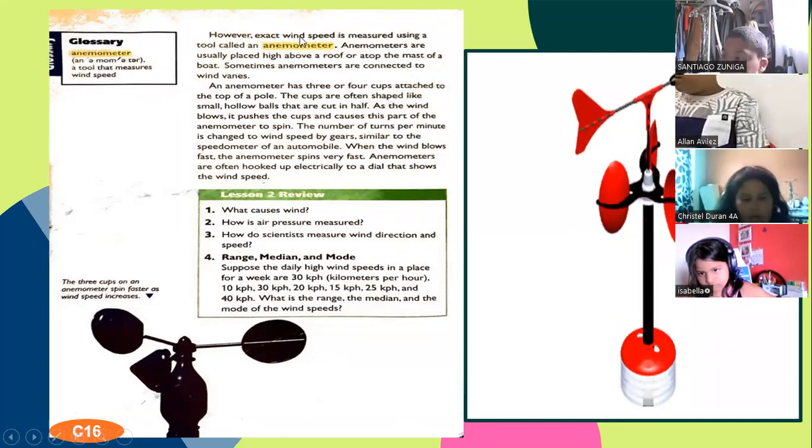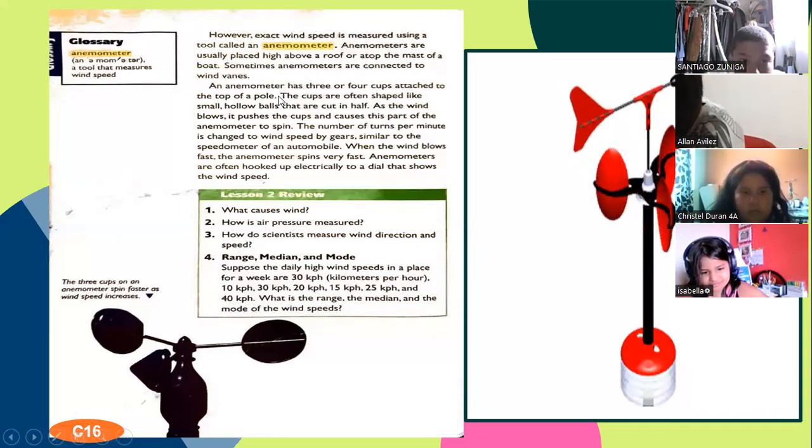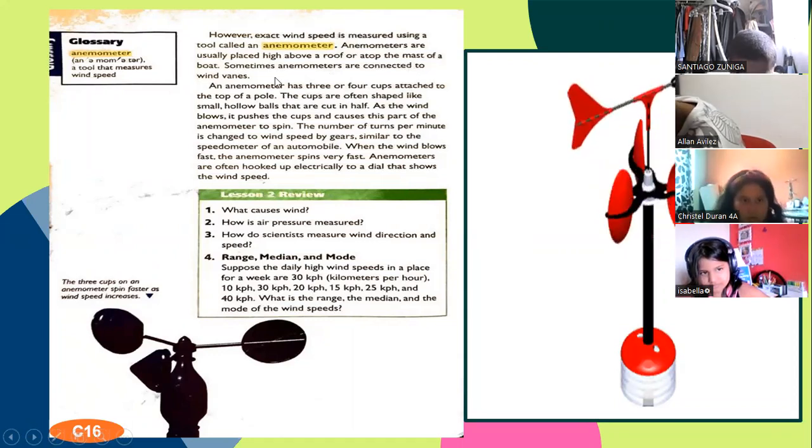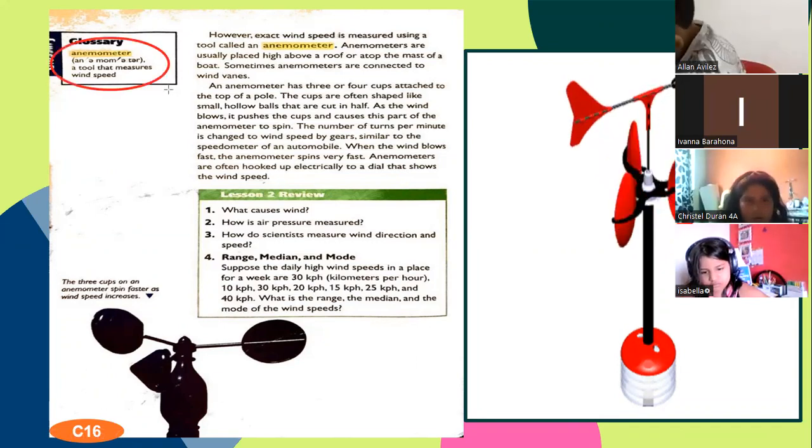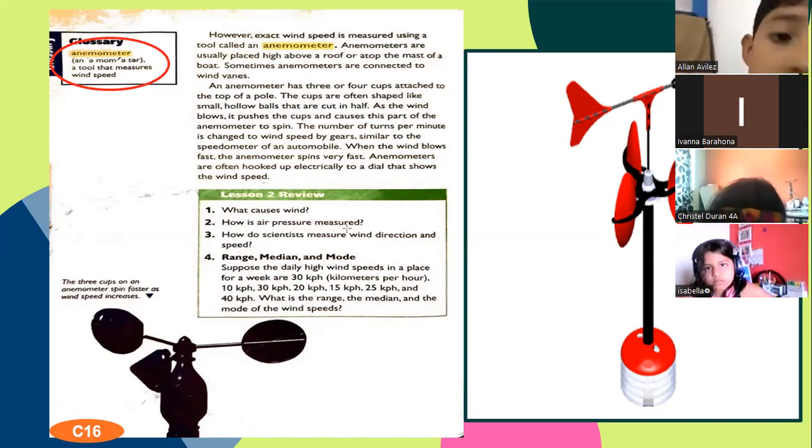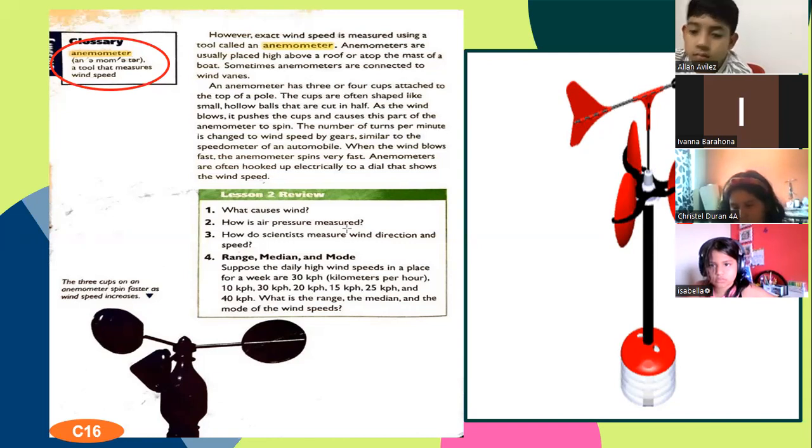Copy this definition. Anemometer. However, exact wind speed is measured using a tool called an anemometer. Anemometers are usually placed high above a roof or atop the mast of a boat. A tool that measures wind speed. So we saw three. The barometer measures pressure. Wind vane measures direction. Anemometer measures speed. Wind speed.